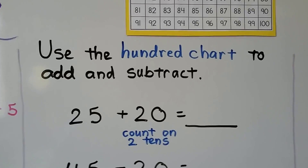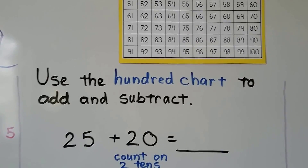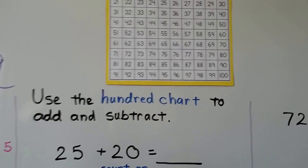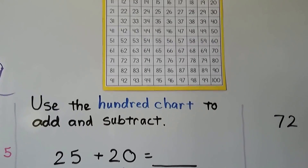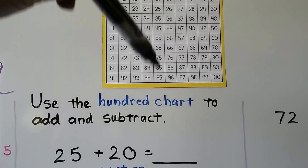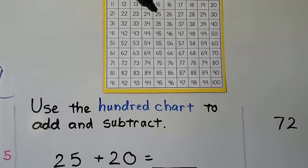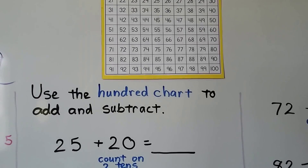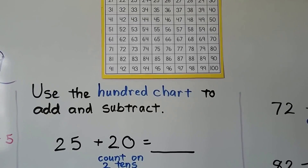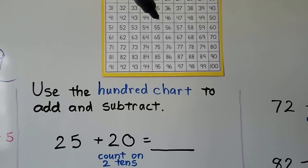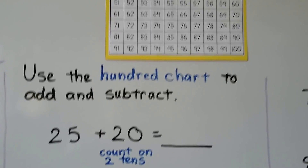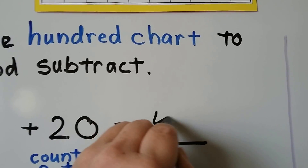We can use the 100 chart to add and subtract. For 25 plus 20, we start at the 25 — here is the column that has 5s in the ones place. We want to add 20, so we count on two tens: 25 to 35, then 45. So 25 plus 20 is equal to 45.